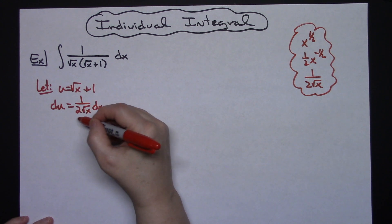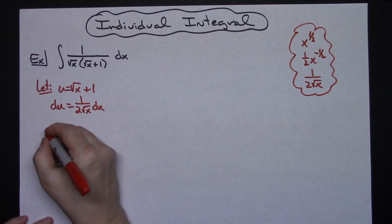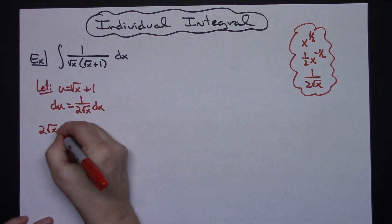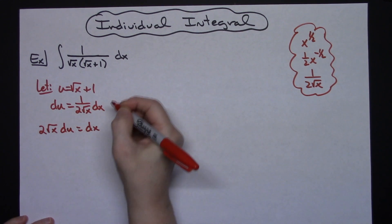So I'll multiply both sides of the equation by 2 square root of x. So 2 square root of x du is equal to dx.